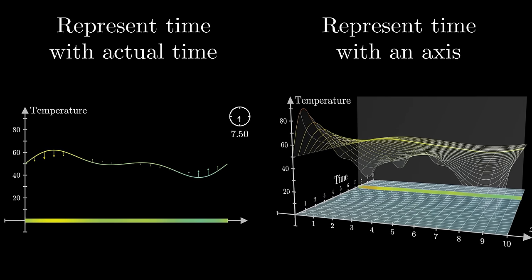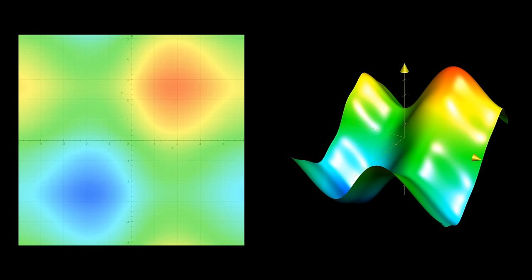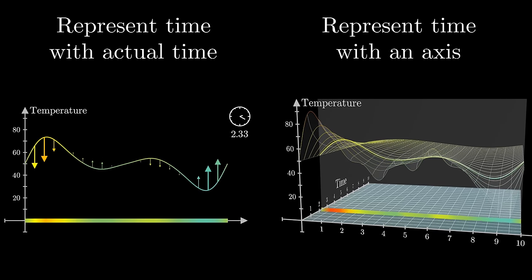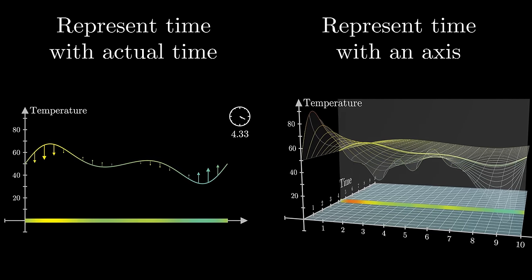This surface is not to be confused with what I was showing earlier, the temperature graph of a two-dimensional body. Be mindful when you're studying equations like these of whether time is being represented with its own axis, or if it's being represented with literal changes over time, say in an animation.